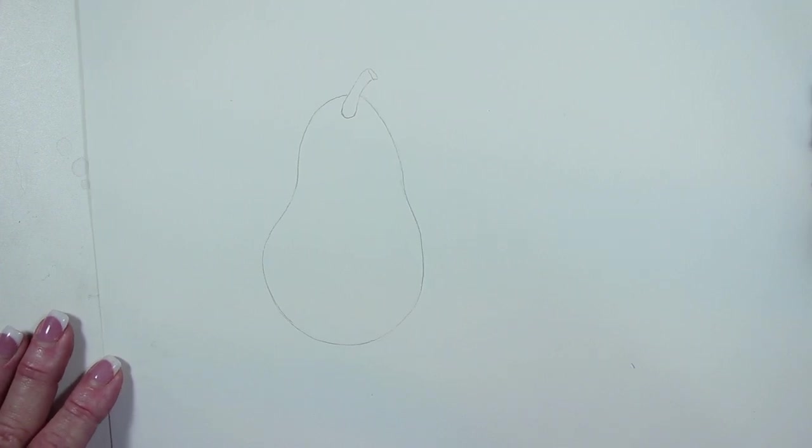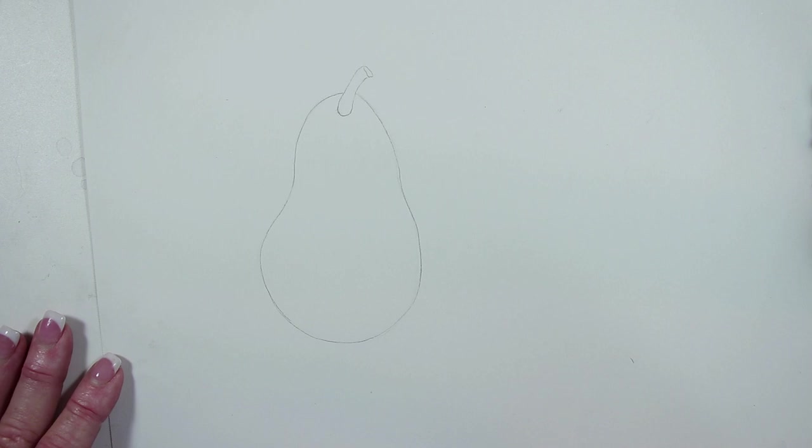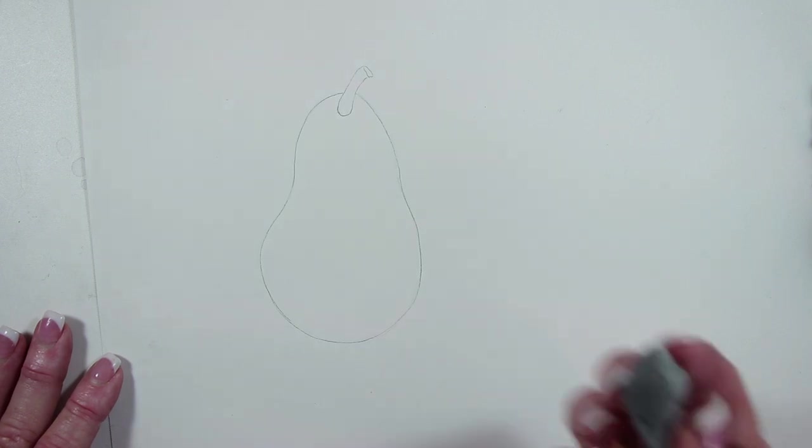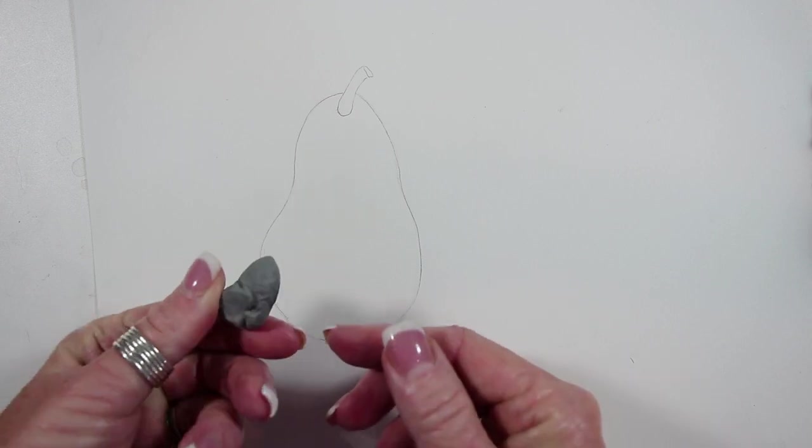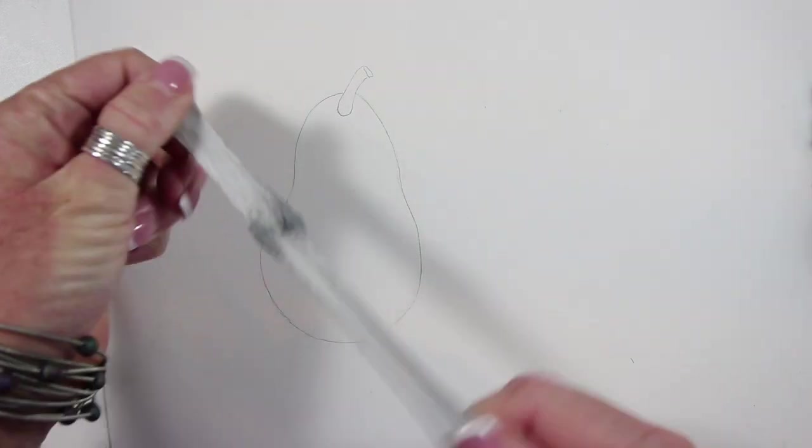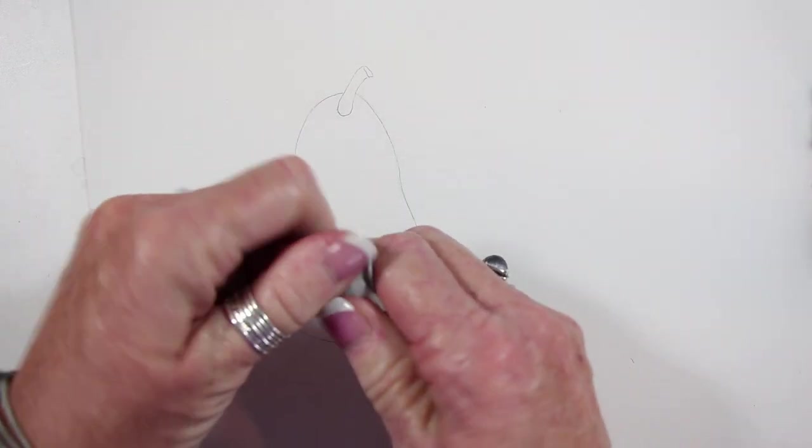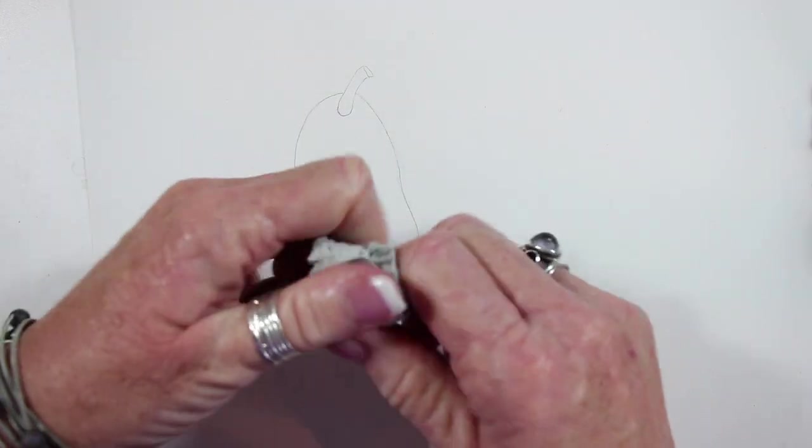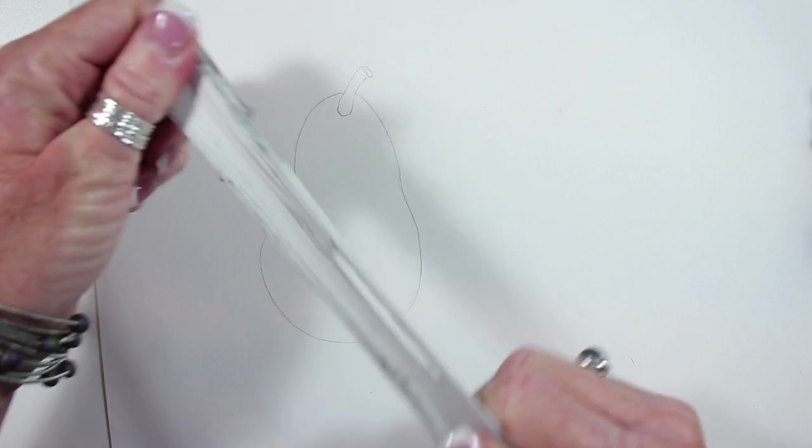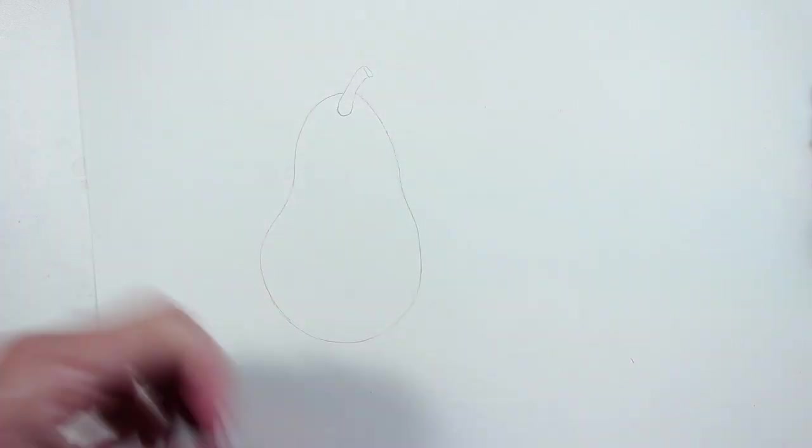Now the drawing is nice and clean. It's ready to put tone on it. So basically what's happened is that the HB was done very soft and sketchy. The 2H was then put on top and then the kneaded eraser was used to lift. Now that I have graphite on the kneaded eraser, I'm going to come in and knead the kneaded eraser to redistribute any of the graphite particles to keep the kneaded eraser working properly.